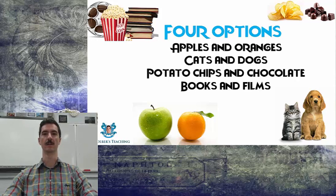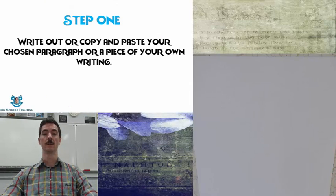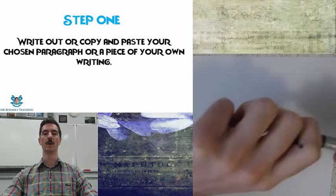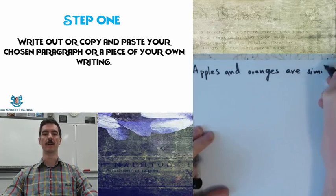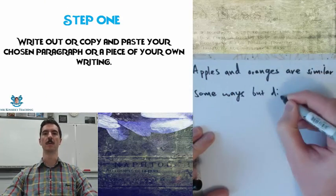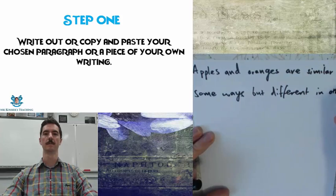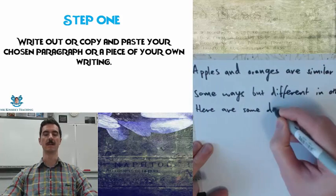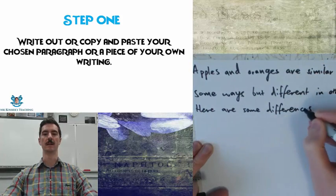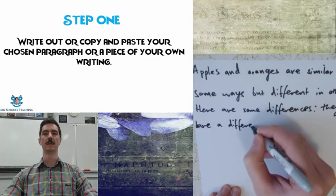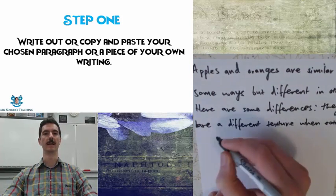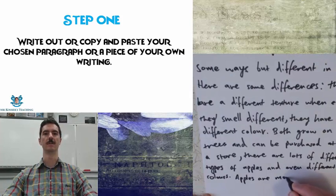Step one is just to write out — and I prefer you did this in writing — write out your own copy of your chosen paragraph from the comment section below. As you can see from the example pictured here, I've left a space above and below each line so I can add my own little annotations in the different colors I will choose for step two.